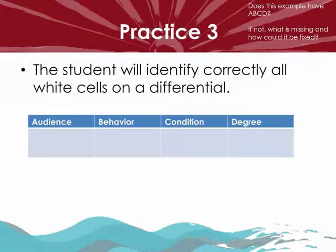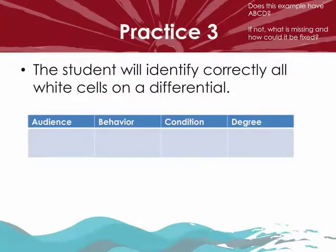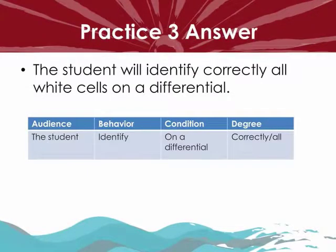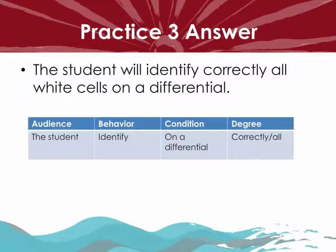Practice 3: 'The student will identify correctly all white cells on a differential.' Does this have A, B, C, and D? The answer: Audience is 'the student,' Behavior is 'to identify,' Condition is 'on a differential,' and Degree is 'correctly' or 'all.' This objective contains all four components.